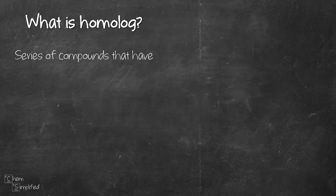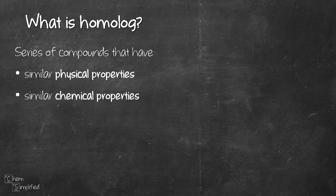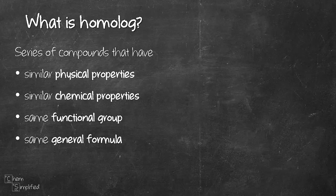It's actually a series of compounds that have similar physical properties, similar chemical properties, same functional group, same general formula, and they differ by CH2 units. The last point is one of the most important points in defining homolog. So we'll go through each of these using an example.